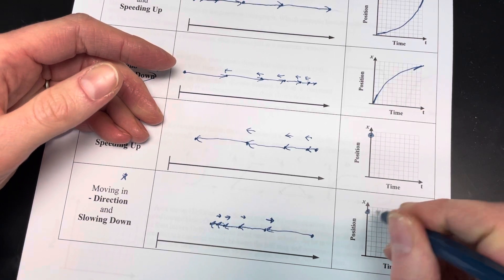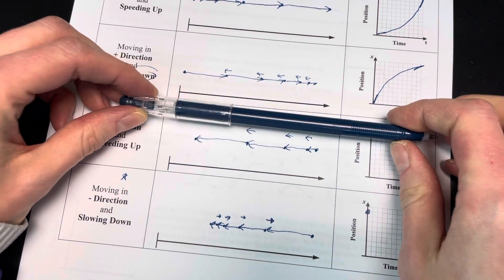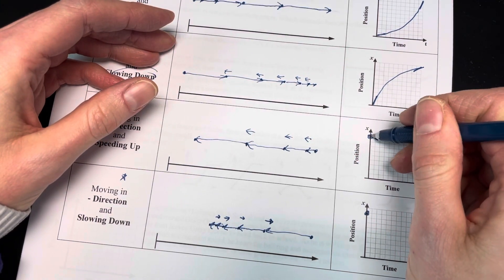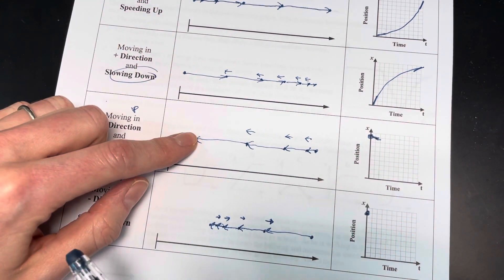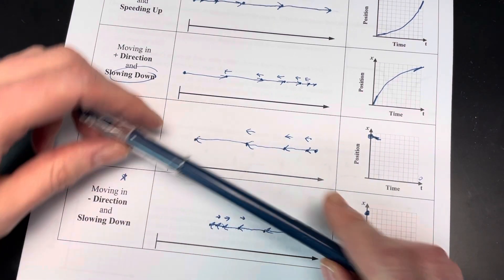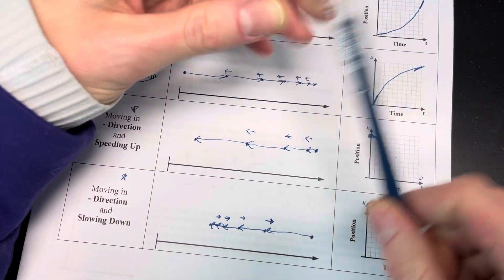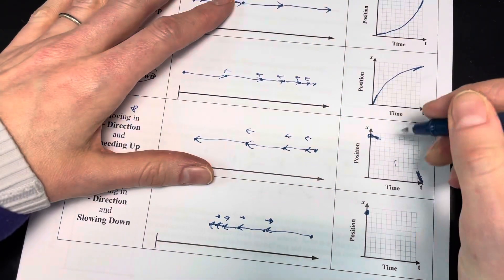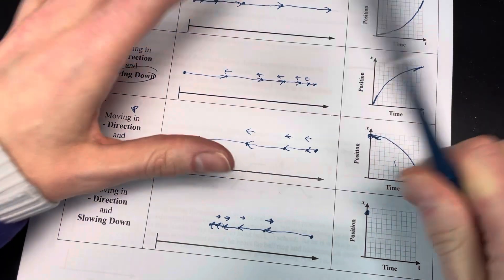Both times it's going to start out up here, and it's going to start out slow, so not very steep. It's going to end up down here somewhere, and it's going to be going fast down there, so it's going to be steep. Do you see how it's going to go this way? My line is going to curve like that.